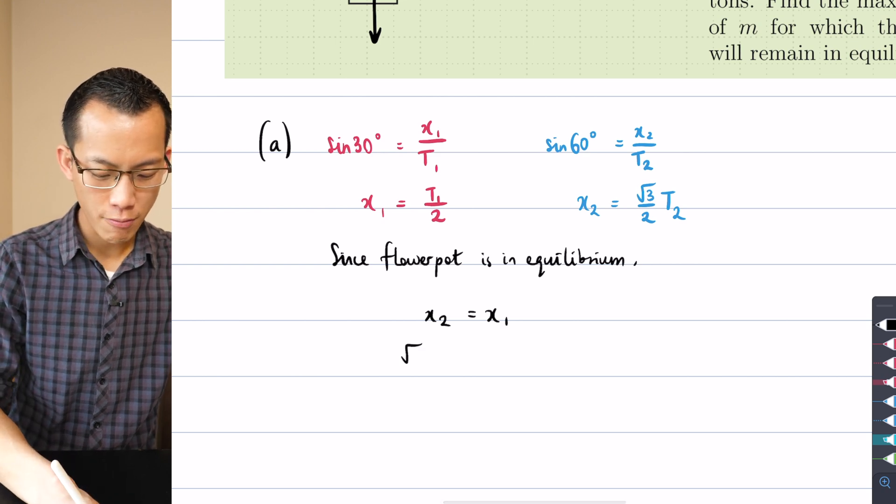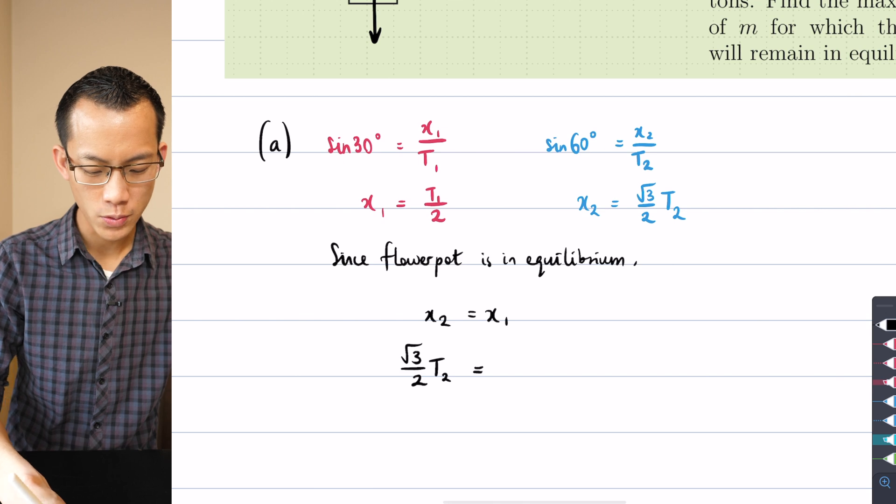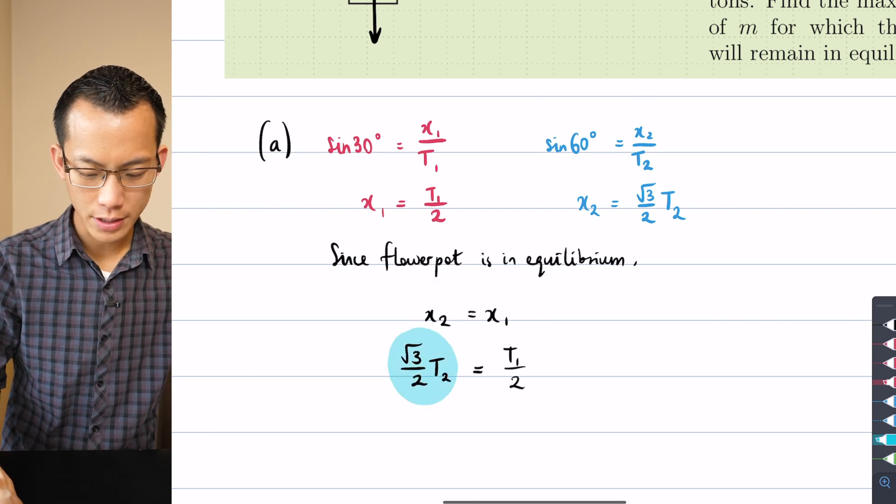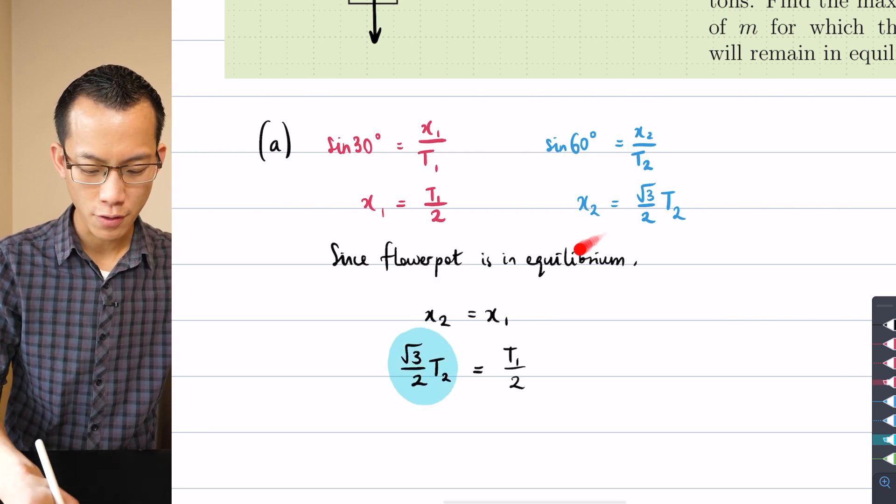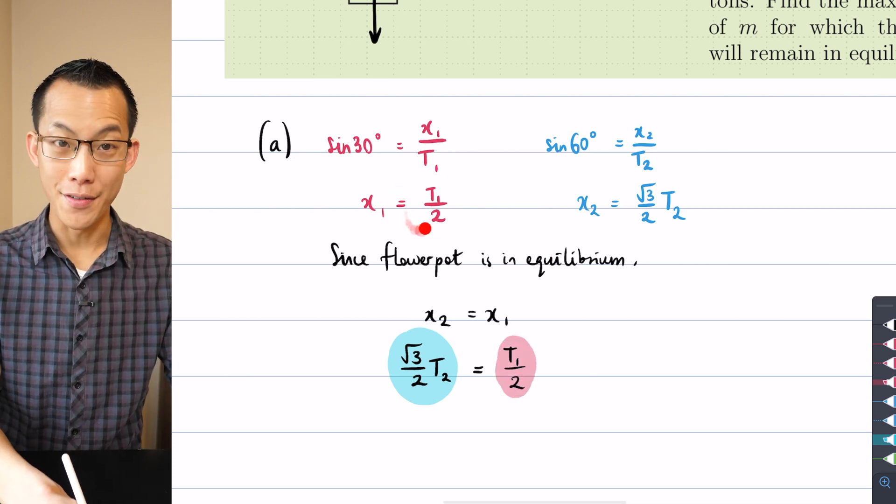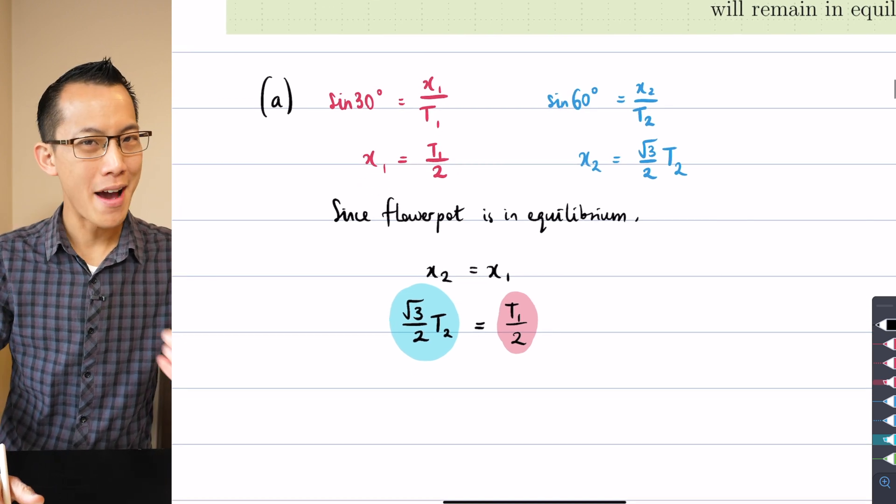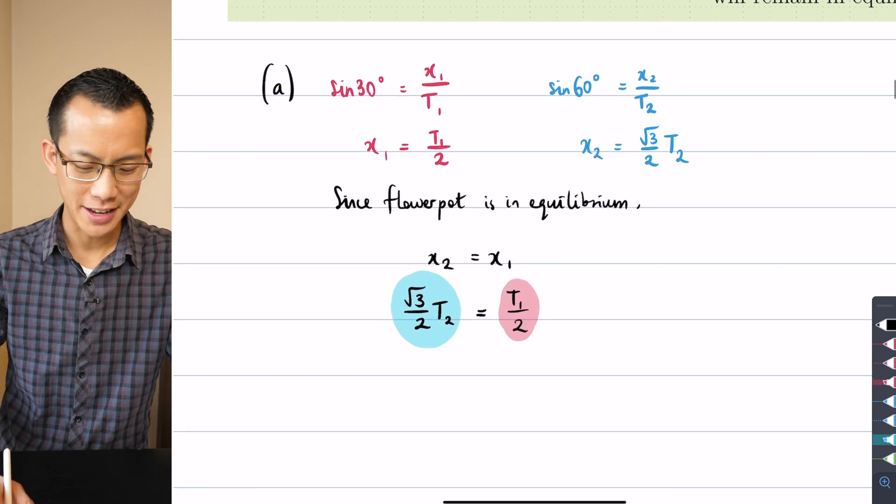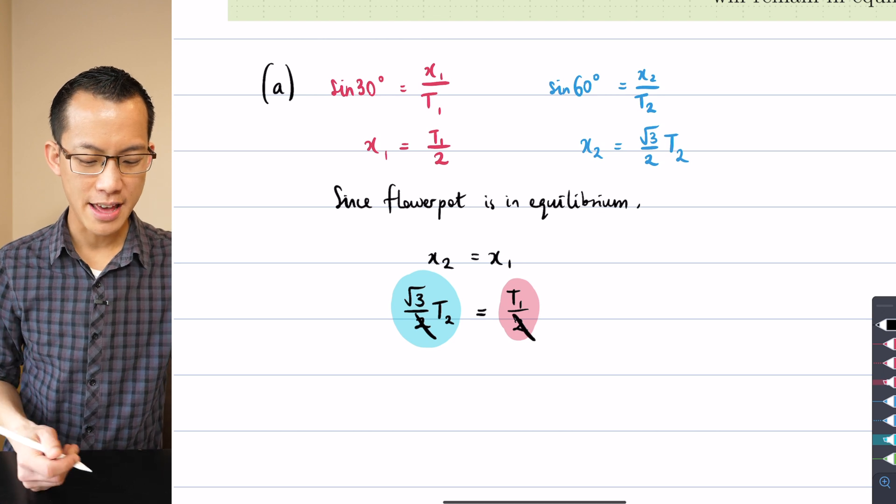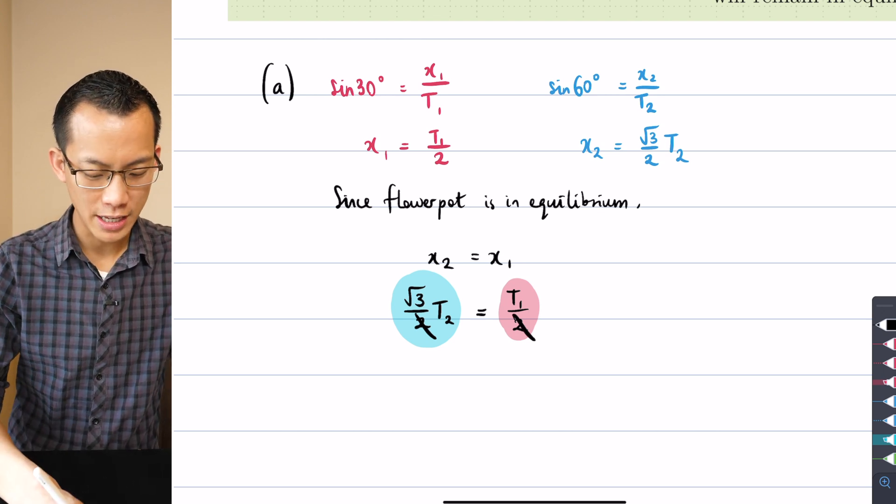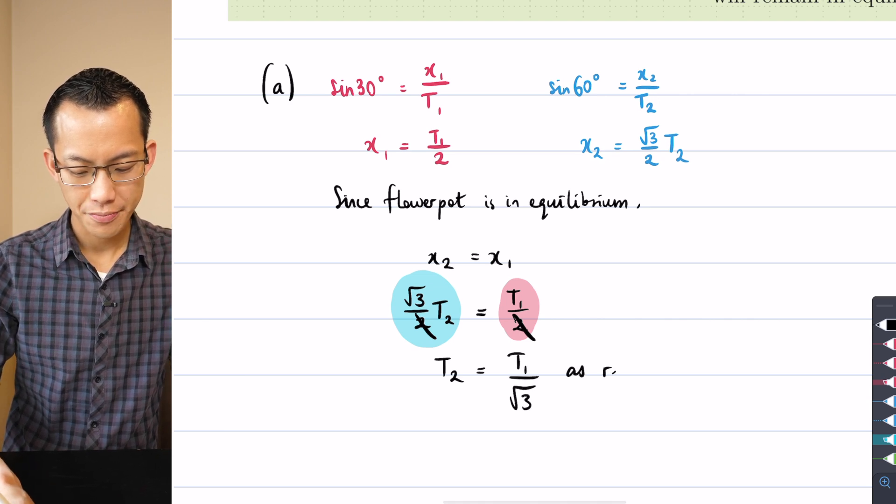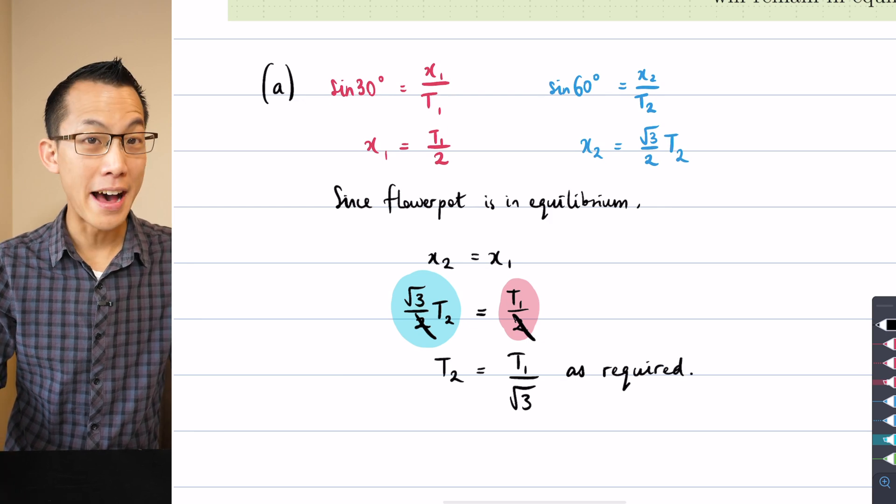So it's going to be root 3 on 2 T2 equals T1 on 2, and I hope that you can see this is where I got that result from. I'm doing the same thing, the T1 on 2 because I got it from over here. There's really just one line of working required to get to, it's not even a line of working, I'm just going to write down the given result. I'm multiplying both sides by 2 which cancels our two denominators down here, and then I'm dividing by root 3, so that gives me as required T2 equals T1 on root 3, and that's part a.